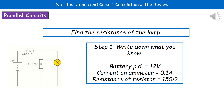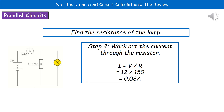Our first step is always to write down what we know. The potential difference of the battery is 12 volts, the current near the battery is 0.1 amps, and the resistance of the resistor is 150 ohms. The second step is to find the current through the resistor loop. Rearranging V = IR gives I = V ÷ R, so 12 divided by 150 gives 0.08 amps through the resistor loop.